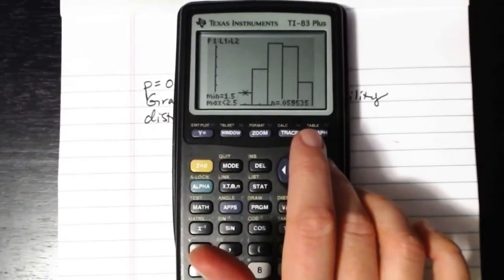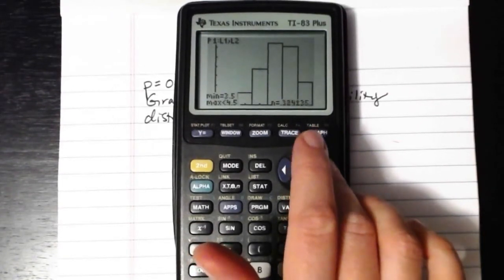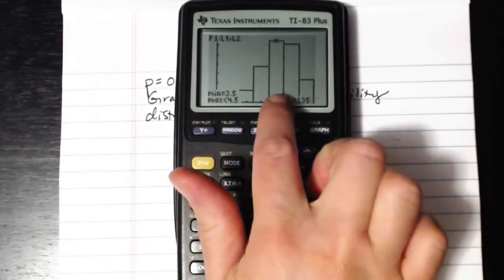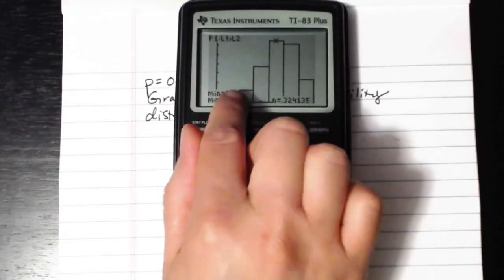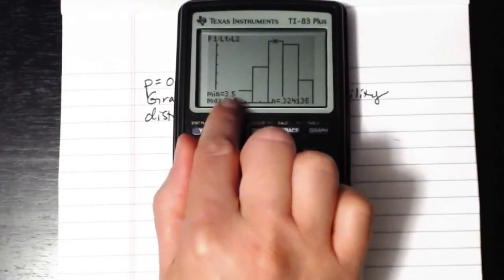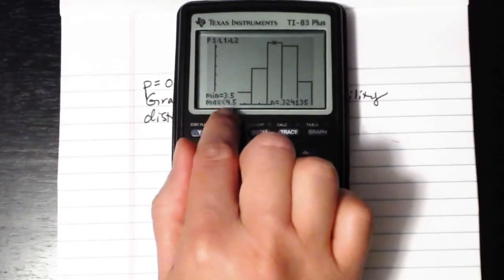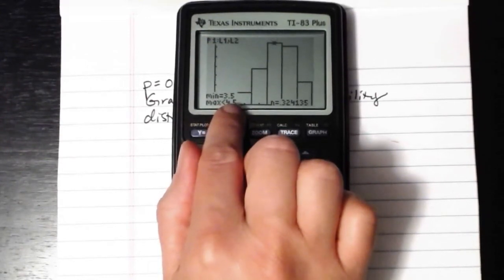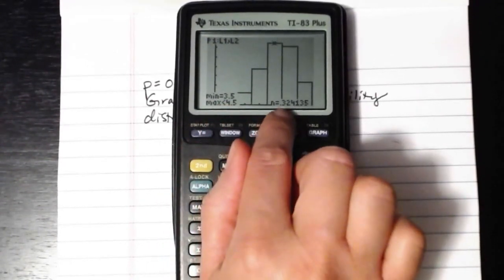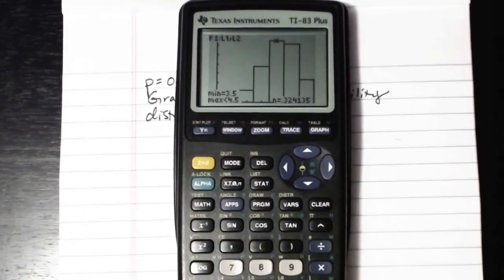If you press the right arrow key, you can move the blinking cursor around to different classes. Here we can see this is our highest class, since it goes from 3.5 to 4.5, that would represent 4 successes, because 4 is the midpoint there, it's smack in the middle, and 4 successes has a 32% roughly chance of occurring. And that's how we make a histogram on our calculator for a binomial probability distribution.